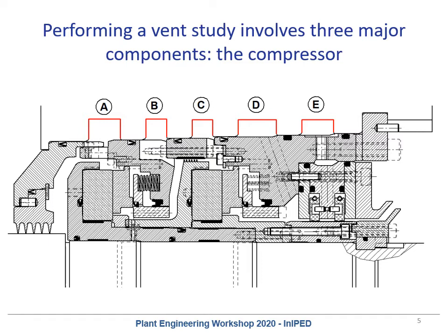Typically these drillings are assumed to be unrestricted, and that's generally true for all non-failure conditions. But in the event of a seal failure, flow rates can become quite significant, and consequently the pressure drops and restriction offered by these drillings can also become significant. Additionally, if the drillings take tortuous paths with 90-degree turns, that can make the restriction even greater. It's very important to consider these drillings and how the annuli exit the compressor when doing your vent study.